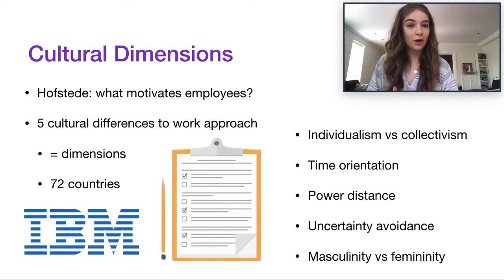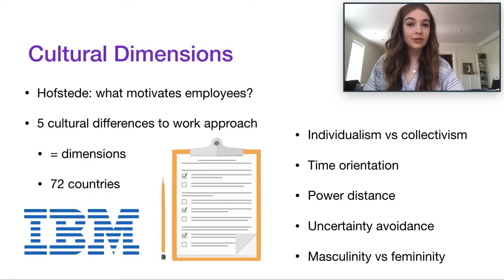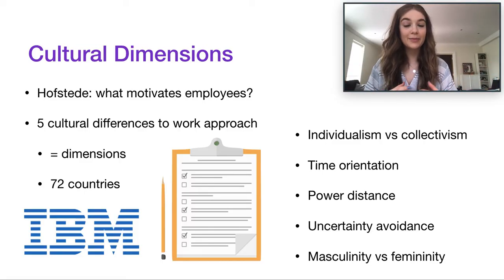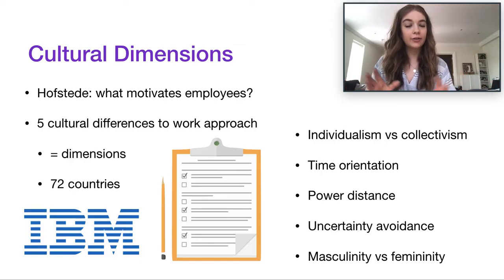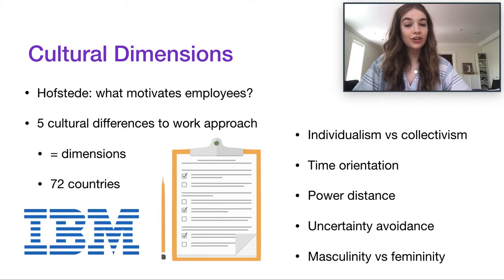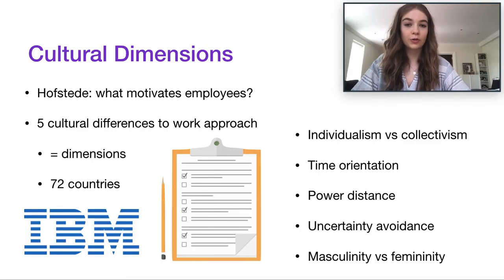It was actually 72 countries around the world, and he focused specifically on cultural differences. When he gathered all the surveys, he performed what's called an inductive content analysis — basically breaking down all the themes he saw in the surveys, finding common themes, and creating conclusions based on that. The big differences he found from culture to culture were essentially different approaches to how different cultures approach work. This is what he called cultural dimensions — the cultural differences in work approach.